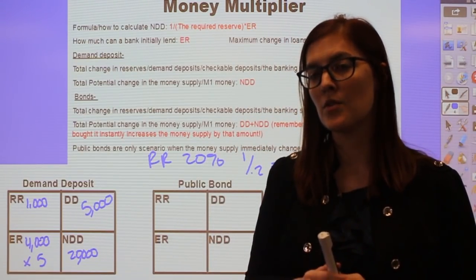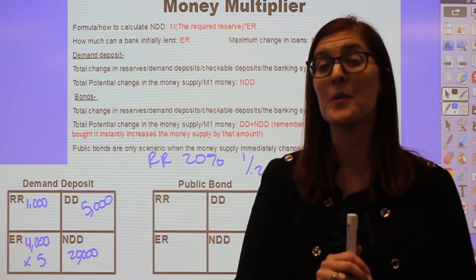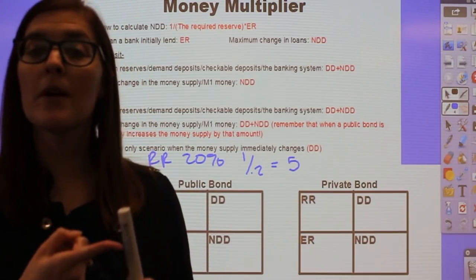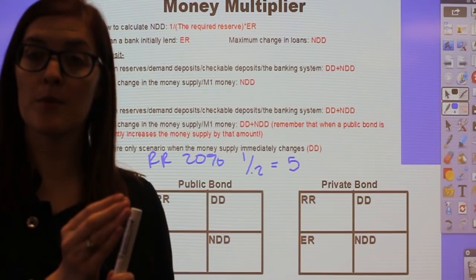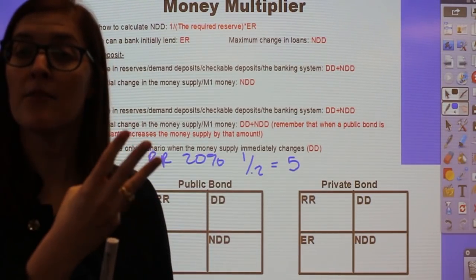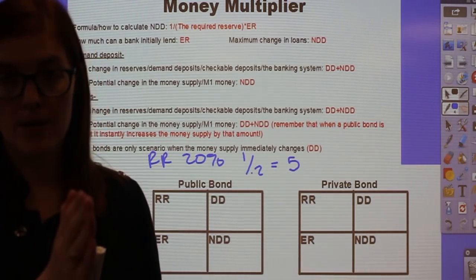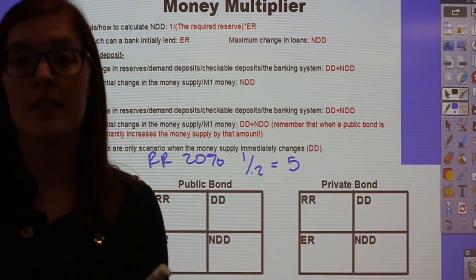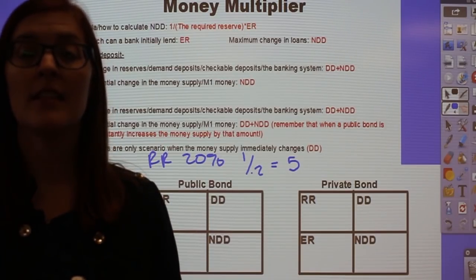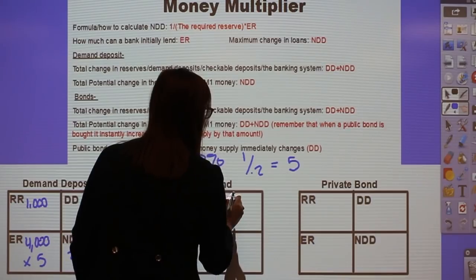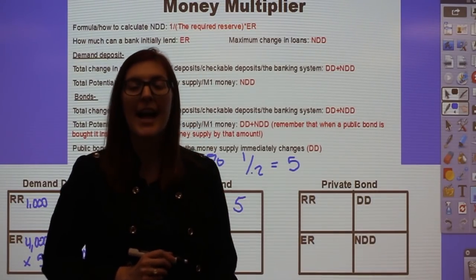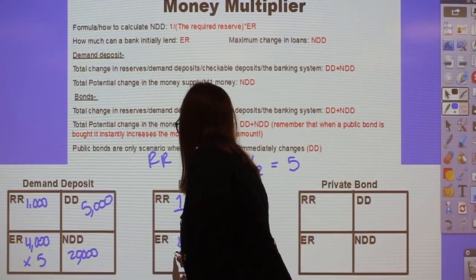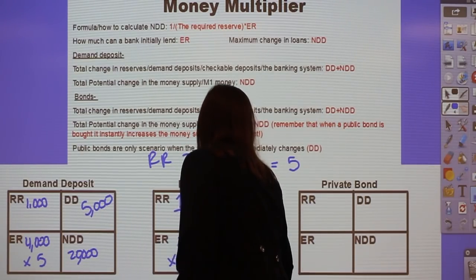That's a demand deposit problem — the most common. But public bonds are also asked about a lot on the AP exam. Public bonds are the same as open market operations and government securities — bonds from the Federal Reserve to the government. The keywords open, public, and government let you know it's a public bond. We assume the money ends up in the banking system just like a demand deposit. So if the Fed buys $5 million in government securities, that $5 million ends up in demand deposits. The bank keeps $1 million in required reserves (20%), leaving $4 million to loan out. Times that by the multiplier of 5 gives $20 million in new demand deposits.